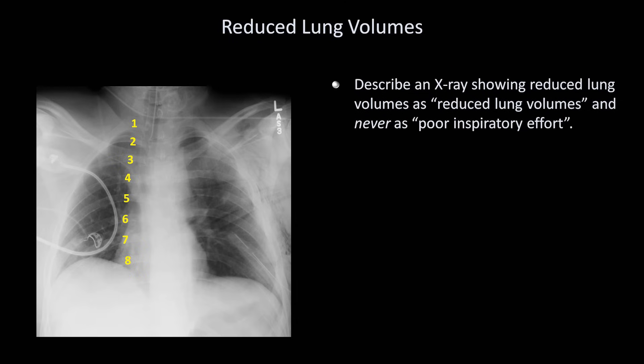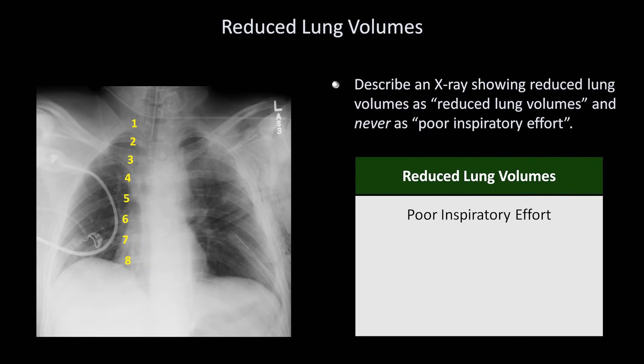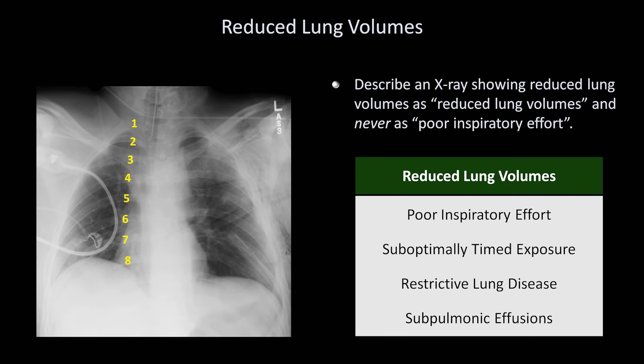Having said that, the most common etiology of reduced lung volume may in fact be poor inspiratory effort. It may also be the consequence of a suboptimally timed exposure. It can be seen in restrictive lung disease due to any of the aforementioned general mechanisms, and finally it can be the consequence of unappreciated subpulmonic effusions, which were discussed in the last video in this series.